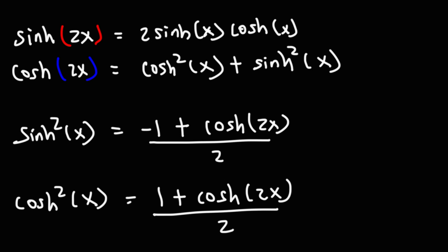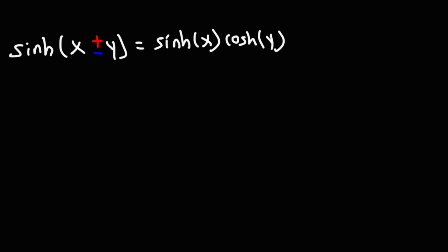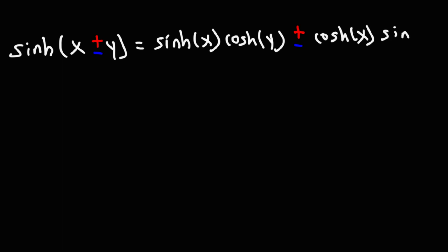Now let's move on to the sum and difference formulas. Hyperbolic sine of x plus or minus y equals hyperbolic sine of x times hyperbolic cosine of y, plus or minus hyperbolic cosine of x times hyperbolic sine of y. Notice the sign is not inverted: when the outer sign is plus, this term is plus; when it's minus, this term is minus.